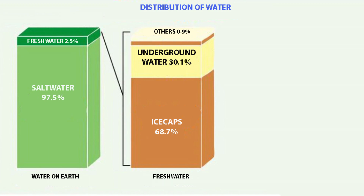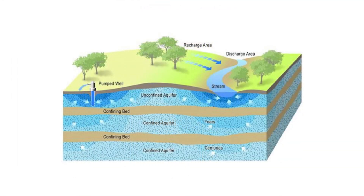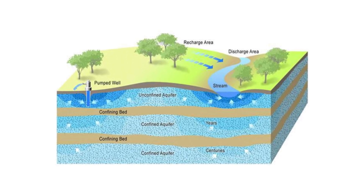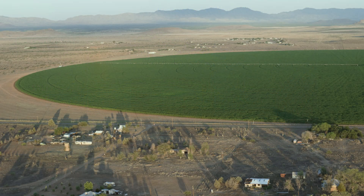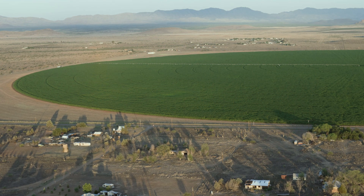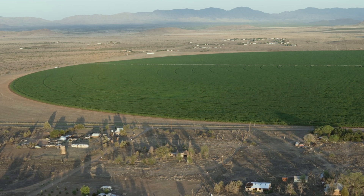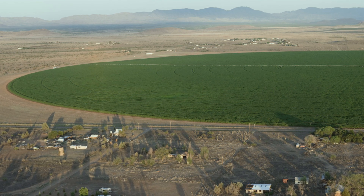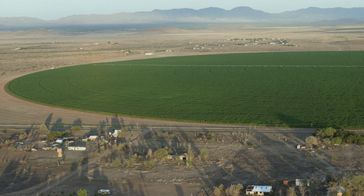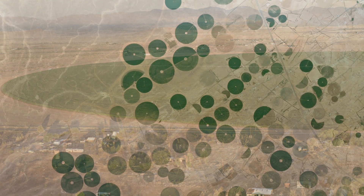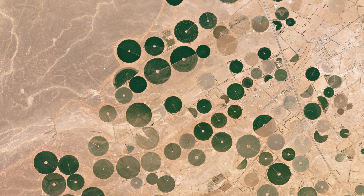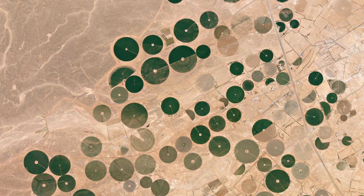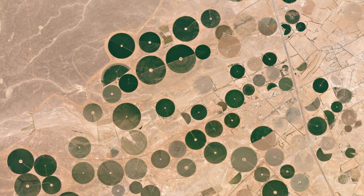Next, 30.1% is groundwater, which is the freshwater that flows beneath the surface. The way to obtain this water is by drilling wells into the ground so that it can be used for drinking or irrigation. Some desert areas have crops not because of the rainwater, but because they extract this water from underground. In some cases, the underground water regenerates every few years when there's enough rain, but in most desert regions, the water is from thousands of years ago. That is called fossil water, and when it's gone, we'll run out of it forever.